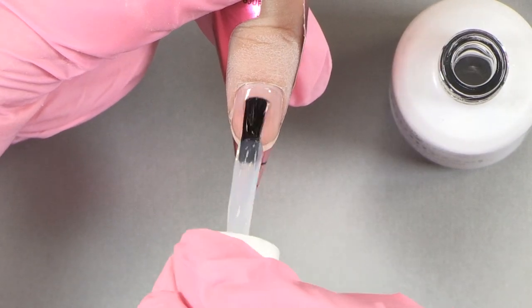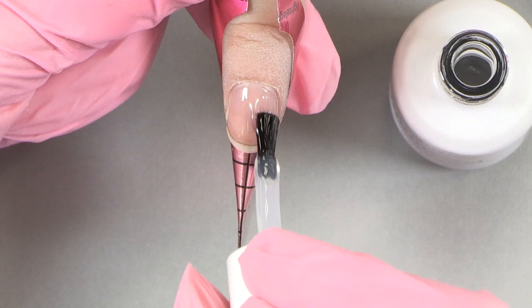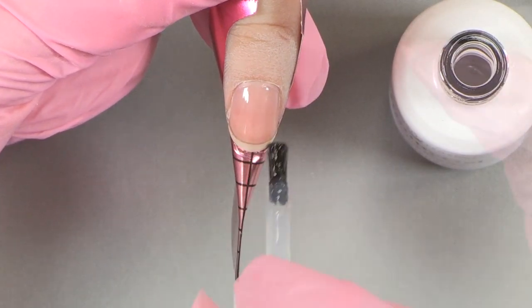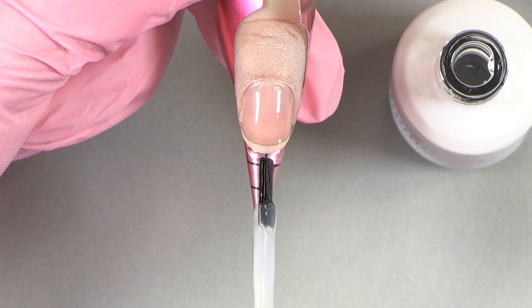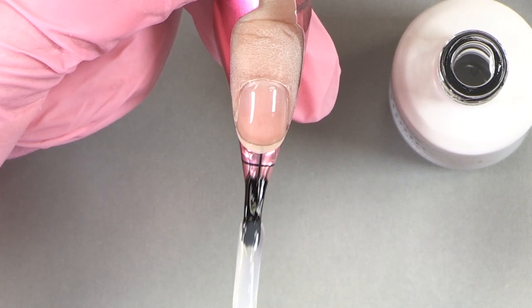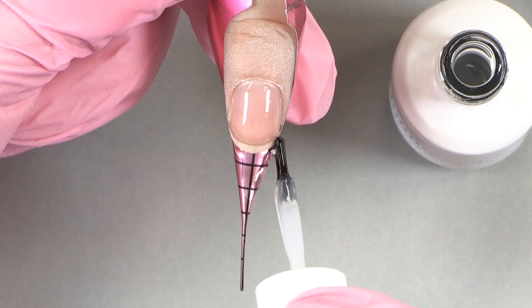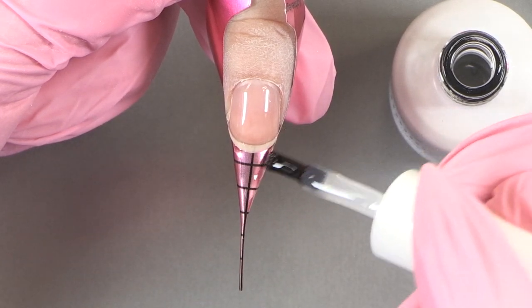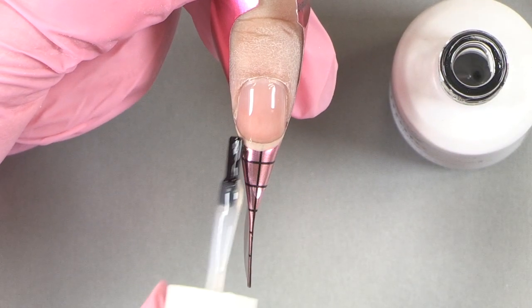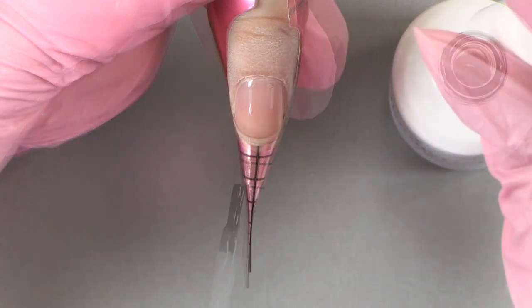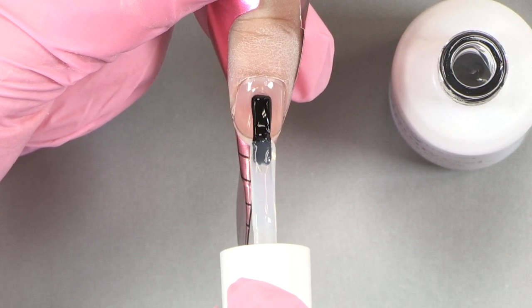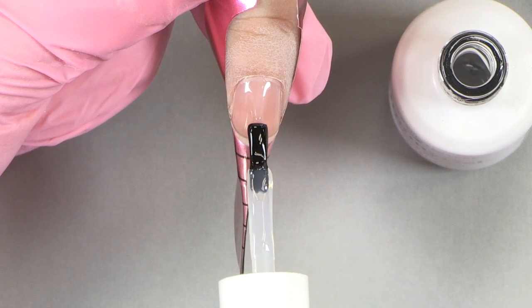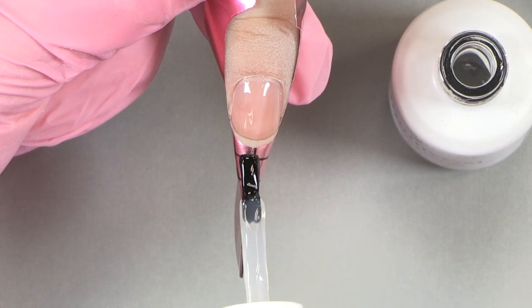Now we're going to apply our Jimmy Gel from cuticle to free edge. Now we're going to take a dollop and use it for the extension. Your client has already picked out their length. See how nicely that Jimmy Gel extends? There's no running. So nice to work with. Now that we have our slip layer down, we're going to put our dollop. Now we're going to cure for one minute in your Light Elegance dot.